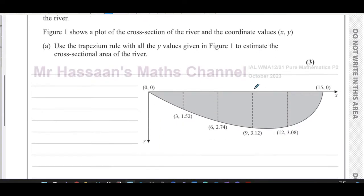It says use the trapezium rule with all the y values given in figure one to estimate the cross sectional area of the river. So basically, what we have to do is split this into a number of trapeziums, which they have given us here. We can see there's one, two, three, four, five trapeziums. So this 15 units across is split up into five equal strips, each strip being equal has to be three units long. Three, as we can see from here, six, nine, twelve.